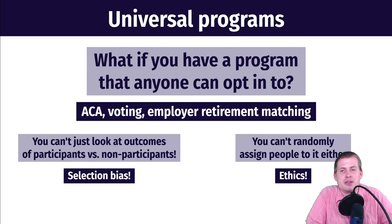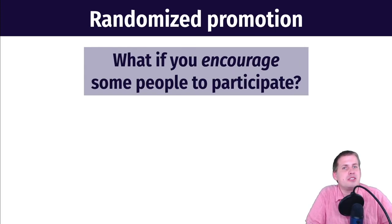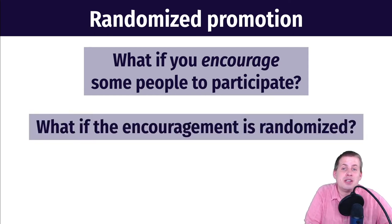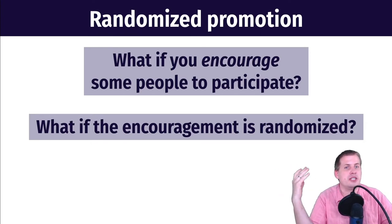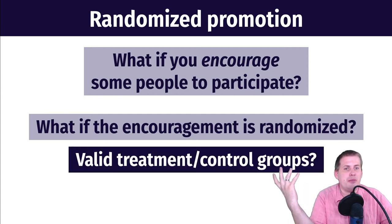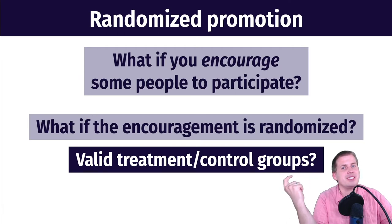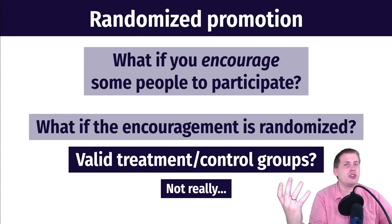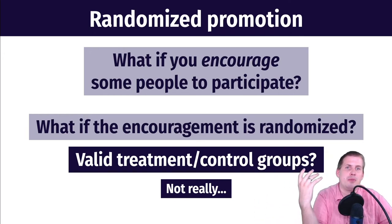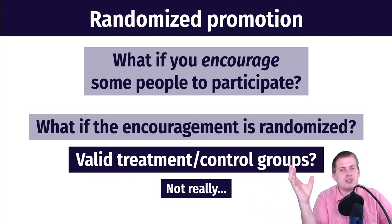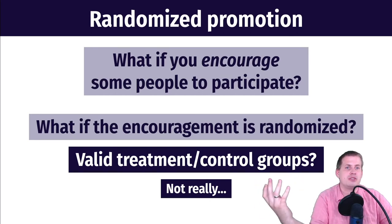What the World Bank recommends is you encourage some people to participate in the program and randomize that encouragement. Rather than randomizing actual enrollment, you randomize so that half the people get somebody knocking on their door saying 'you should vote' and half don't. This randomized encouragement seems like it makes good treatment and control groups, but it doesn't quite work because people still get to self-select — you don't know if they'll actually comply.